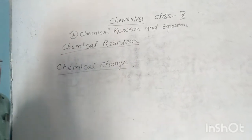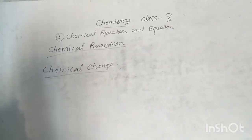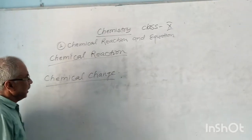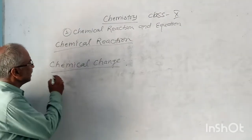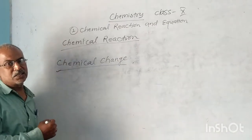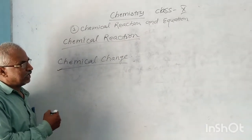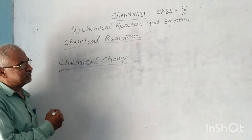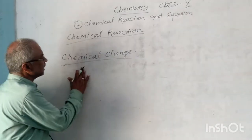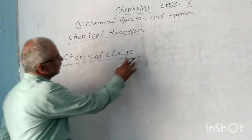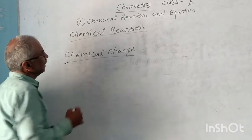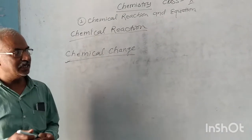Physical Change has no new substance formed, but Chemical Change has a new substance formed. In Chemical Change in our life, examples include: setting of curd, growth of humans and human beings, and growth of plants. Now Chemical Change involves a reaction, and now we know about Chemical Reaction.